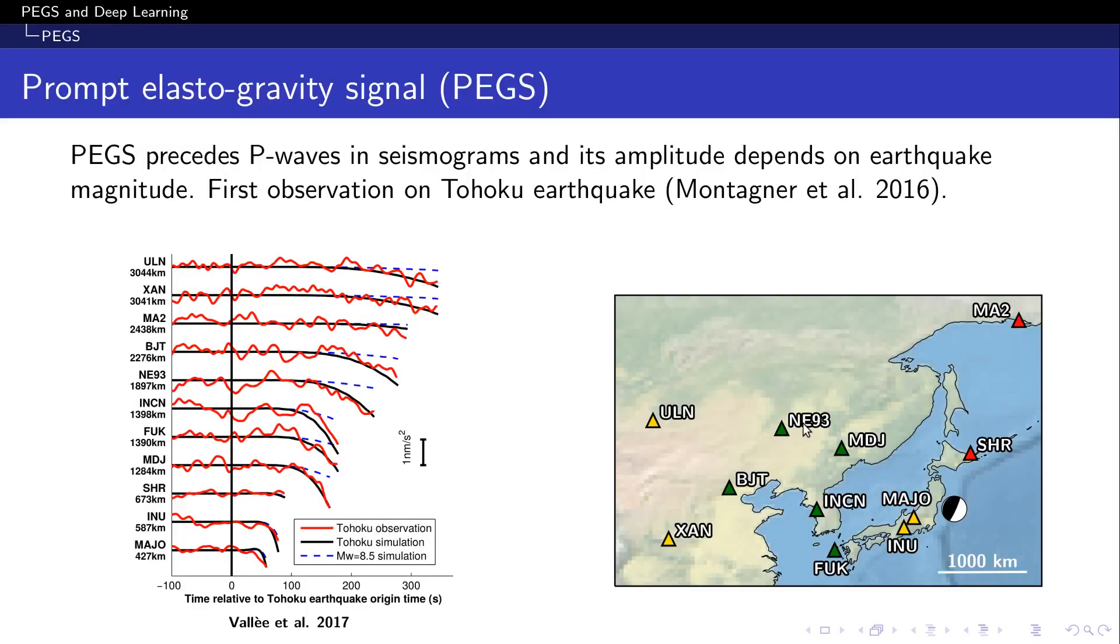First of all, what is the prompt elastogravity signal, or PEGS? PEGS is generated by the gravity perturbations induced by the displacement of large amounts of mass during large earthquakes. Gravity perturbations propagate at the speed of light, so this means that PEGS arrives at a given location before the fastest seismic wave, the P waves, and can be observed on broadband seismometers.